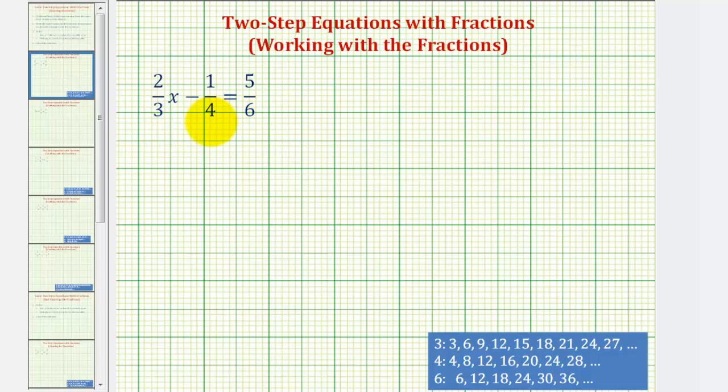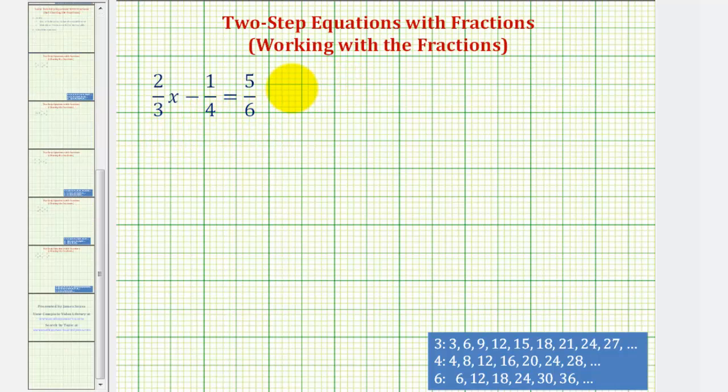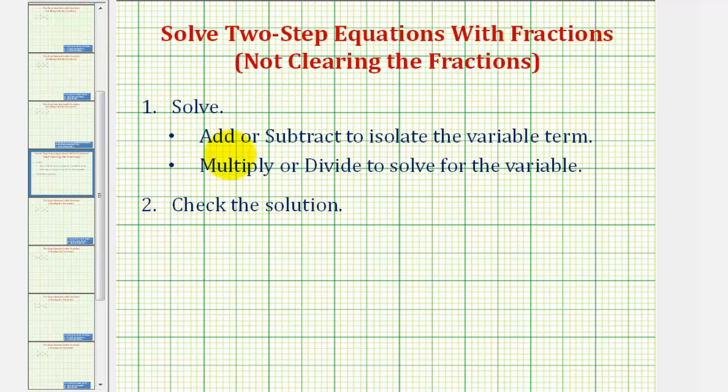Because we're going to solve this by working with the fractions, let's review the general steps on solving a two-step equation. We'll first add or subtract to isolate the variable term of the equation, and then multiply or divide to solve for the variable. Then for step two, we'll check our solution.